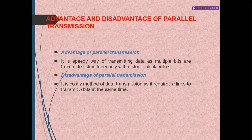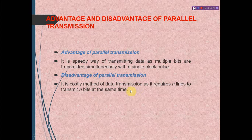Advantages and disadvantages of parallel transmission. Advantage: it is a speedy way of transmitting data as multiple bits are transmitted simultaneously with a single clock pulse. Disadvantage: it is a costly method of data transmission as it requires N lines to transmit N bits at the same time. Parallel transmission is expensive, but its main advantage is that it is very speedy.